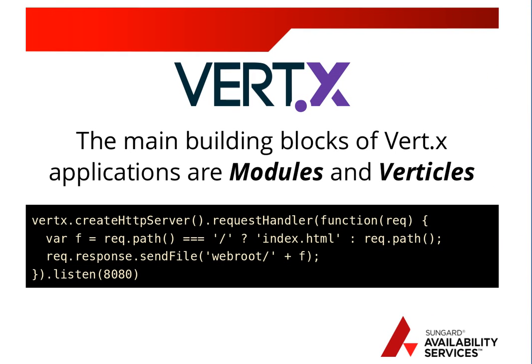Shown here is an example vertical written in JavaScript. All verticals run on top of the JVM with whatever language library you're using. This particular vertical is a static HTTP server. It takes a request, has a lambda function that checks if you're requesting the root of the web server, and then hands off to an asynchronous method to grab the file out of your web root and send it across the wire. Note that the send file method doesn't have 404 handling built in — if you want automated 404 handling, you need to add the Apex web module. But you can add a callback for handling errors as another lambda argument to the send file method.